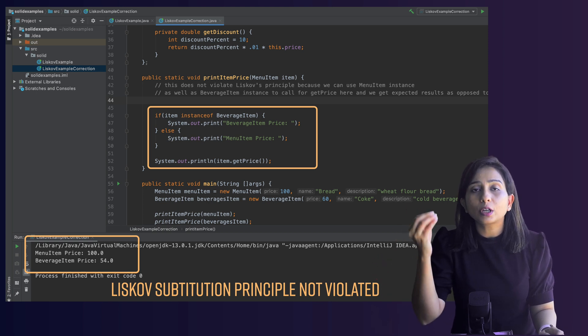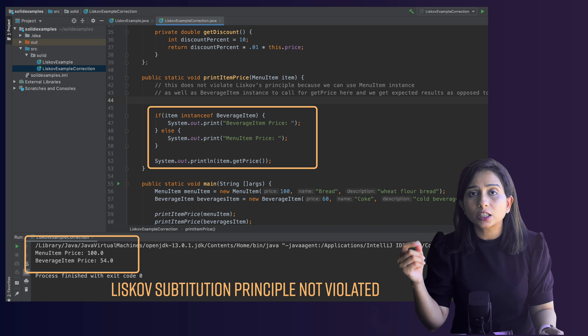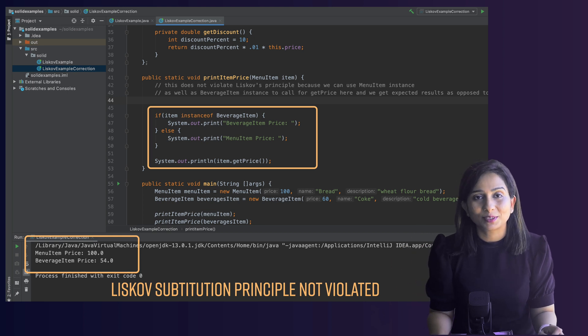When I say client code that means you don't have to change the code which is dealing with the instances of menu items and beverage items. Another simpler way of doing this is if you don't want to complicate it just let the functions getPrice be available in both the classes. In the implementation of getPrice in BeverageItem class you can just do the discount calculation. That would also not violate the Liskov Substitution Principle.